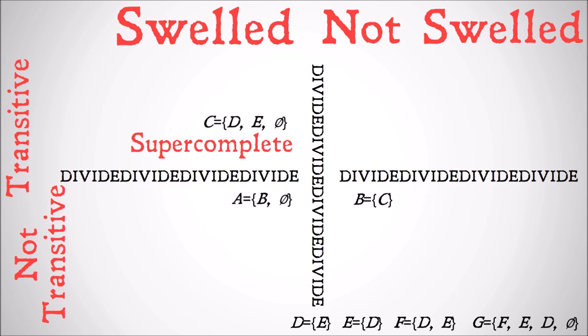What about D? It doesn't contain the null set, so we're pretty sure it's not swelled. As for transitive — its only member is E, and E's only member is D, but D doesn't contain itself. So D is not swelled or transitive. The same applies to E: it doesn't contain the null set so it's not swelled, and E contains D as its member, but E doesn't contain itself, which is the only member of D. So E is also not transitive or swelled.